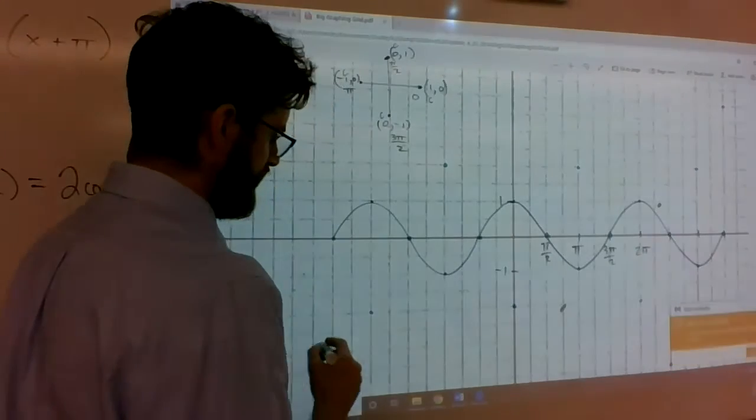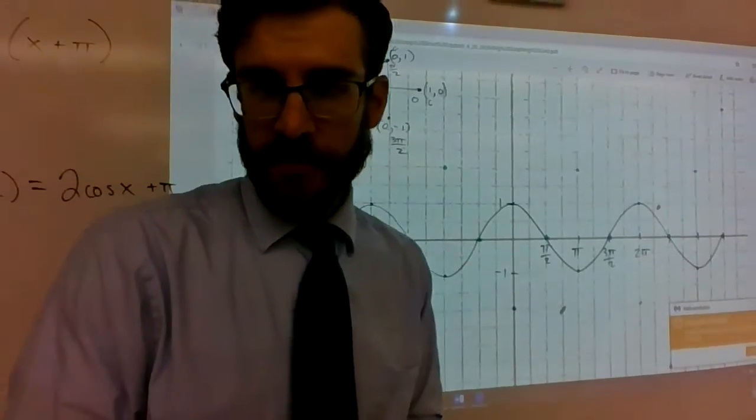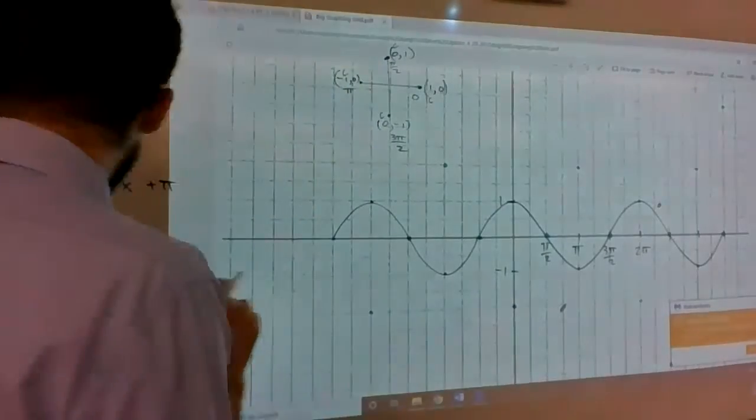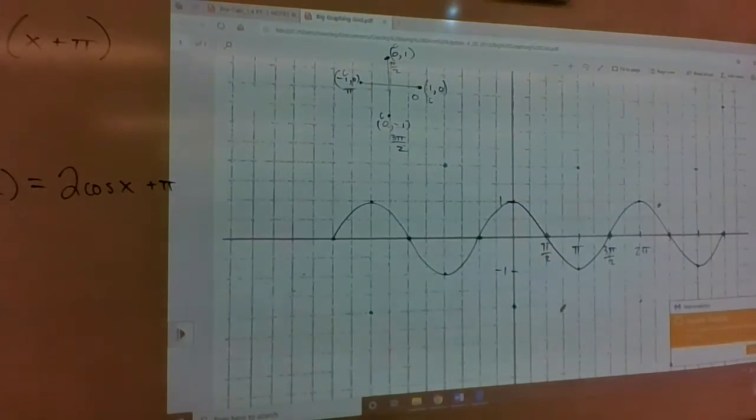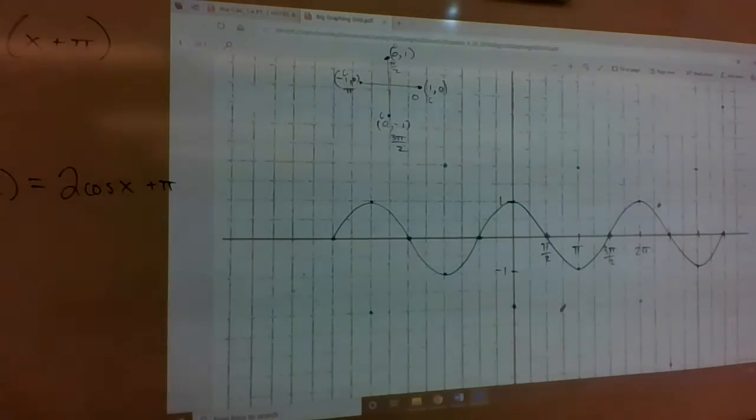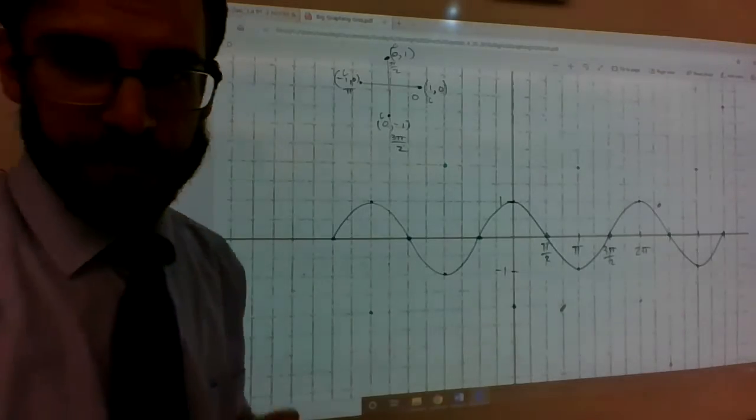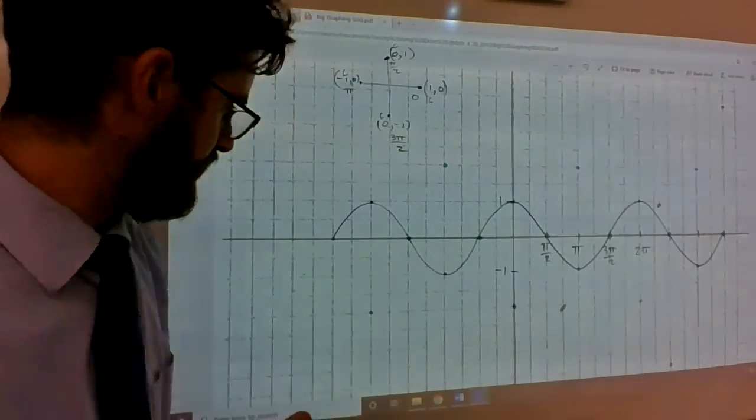So this is cosine. Well, this is - hold on one second. This is 2cos(x+π), where x+π is in the grouping symbol.